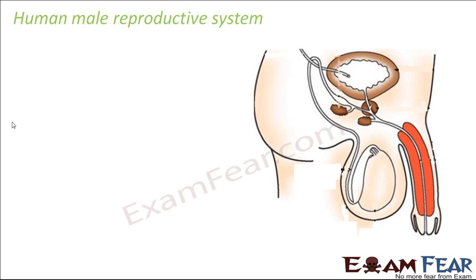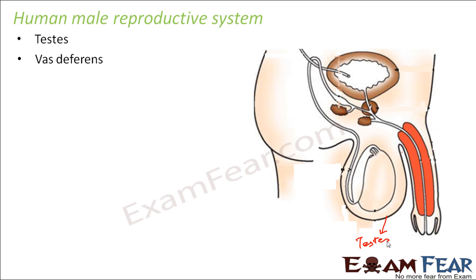Overall, this system consists of the following important organs. First of all, testes — these are a pair of testes, with one testis present on each side of the penis, and they exist in pairs. Next is vas deferens, which is this tube-like structure that we have here.